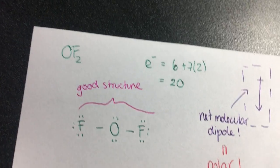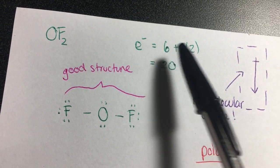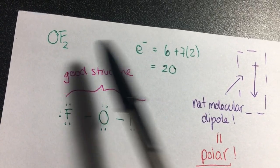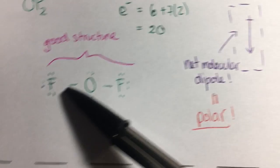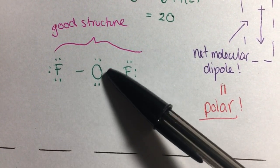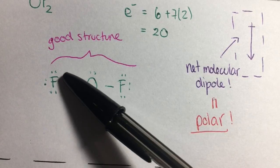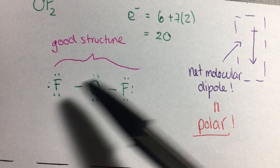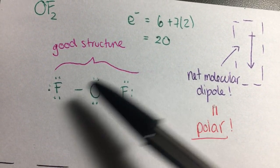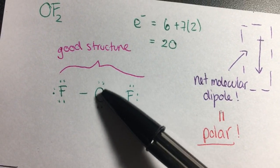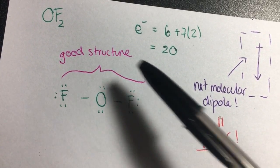Now we move on to OF₂. We figure out how many electrons there are: 6 from oxygen plus 7 times 2 from fluorine gives us 20. We put oxygen in the middle and bond each fluorine atom to the oxygen, then subtract 4, leaving 16. We add 6 non-bonding pairs on each outside atom — that uses 12 — leaving 4 electrons, which go on the central atom. This gives all atoms an octet, so this is a good structure.